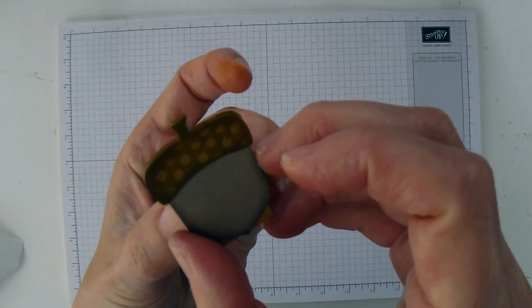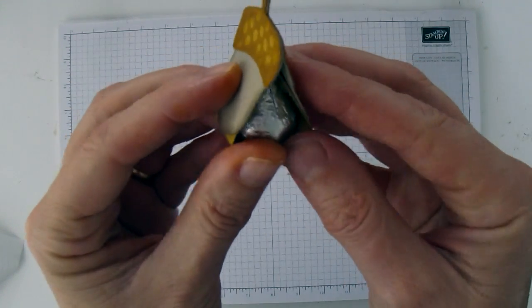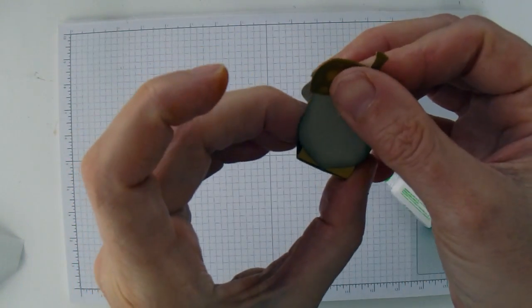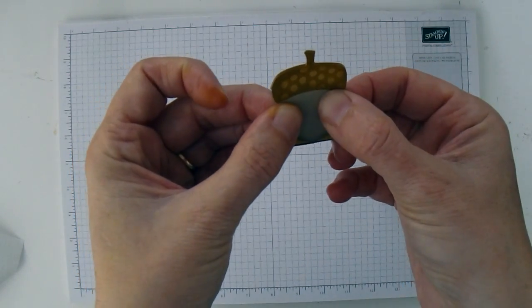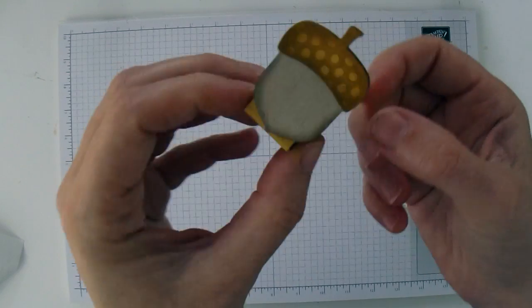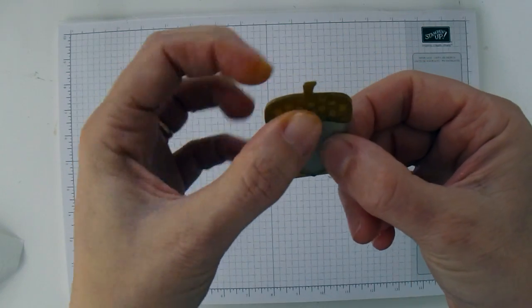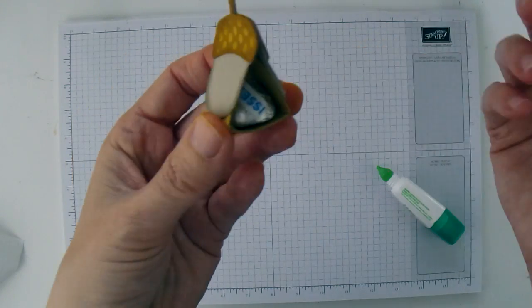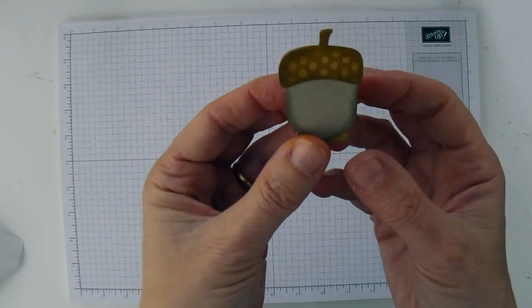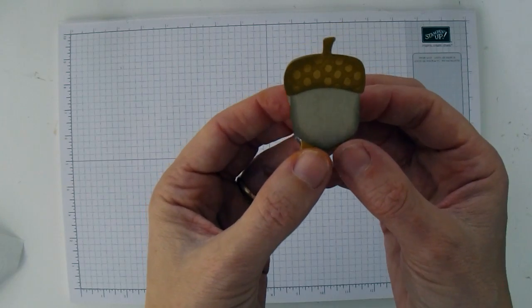So then we just take our little acorn cover and stick it on there. And make sure you look at both sides to make sure it looks good and it's centered properly. And then you can just kind of press down and make sure you've got a good seal. And there you go. You've got a little acorn kiss tent.